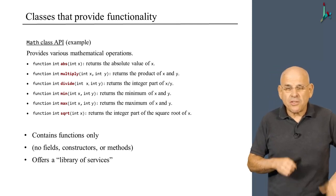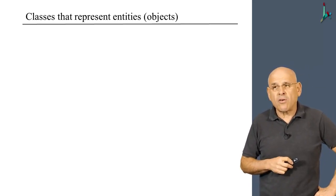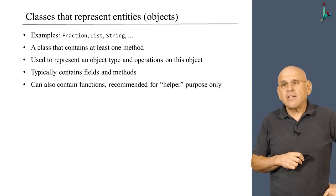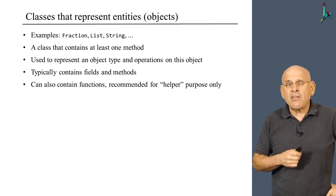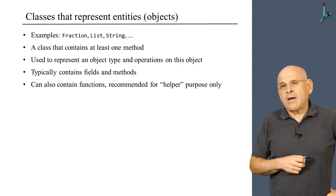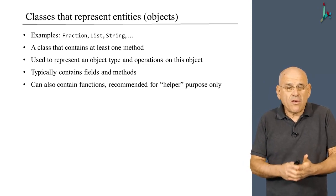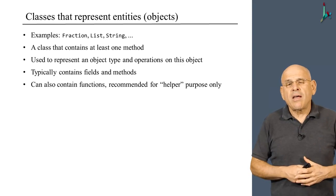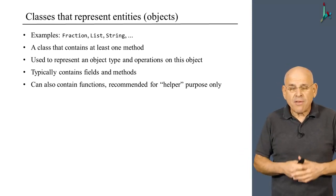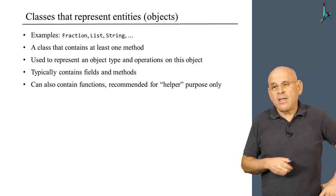And then the other mega category, within which there are many more subcategories, these are classes that represent what we sometimes call entities or objects. Examples of these classes that we saw already are fraction, list, string. Every one of these classes is designed to represent instances of the class, objects that are created and manipulated according to the class capabilities. In Jack, if a class has at least one method, one or more methods, then it is bound to be a class that represents an entity. Typically, such a class will also contain fields and methods to represent the data of the entities and operations that are allowable on these entities.